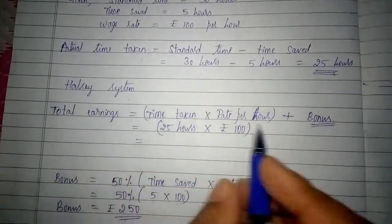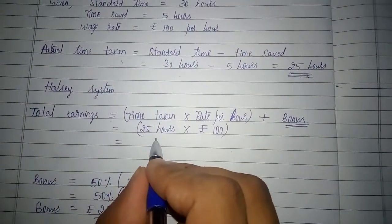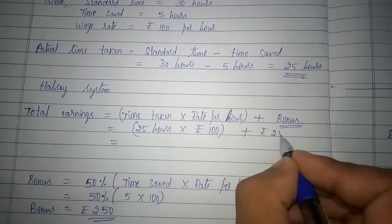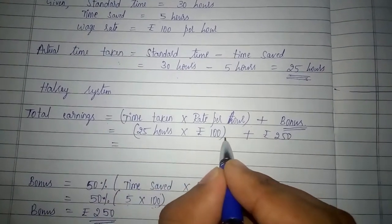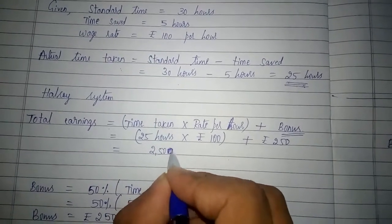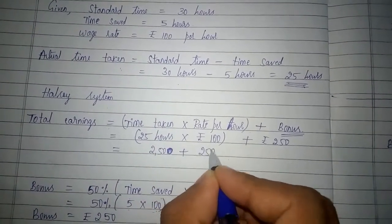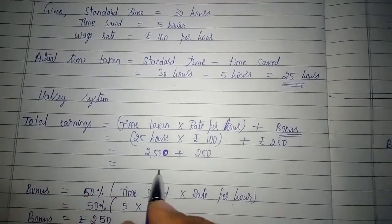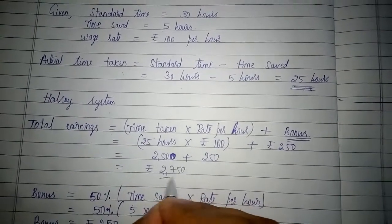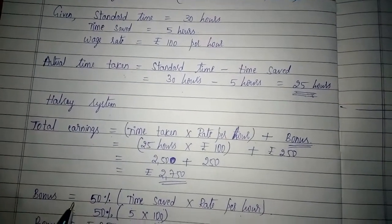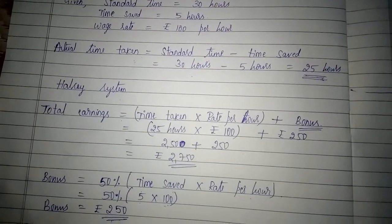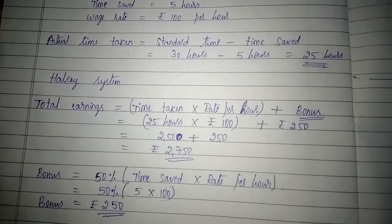So the total earnings will be: time taken 25 hours × 100 + bonus of rupees 250. 25 × 100 = rupees 2,500, plus rupees 250 bonus, giving total earnings of rupees 2,750 as per the Halsey system.